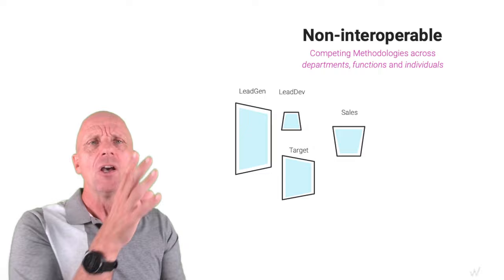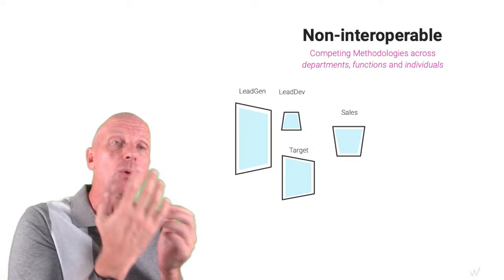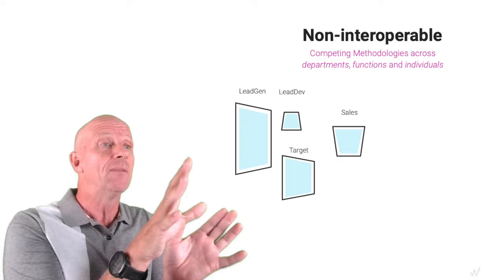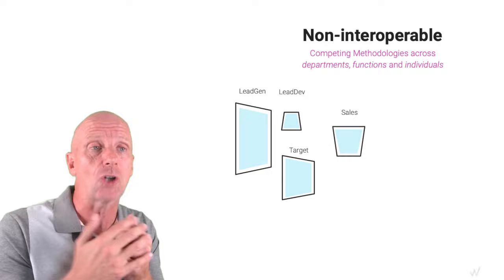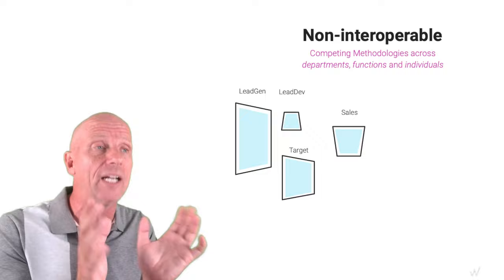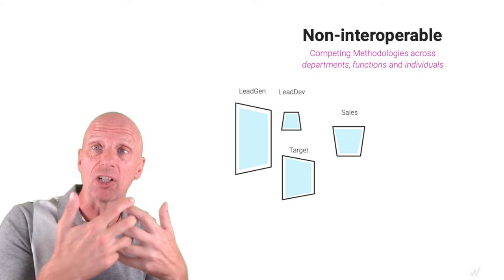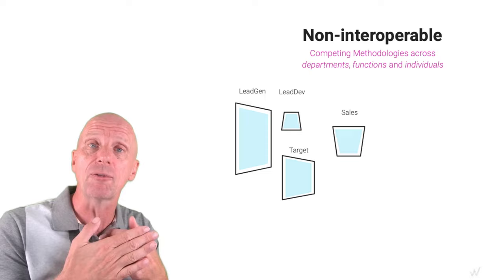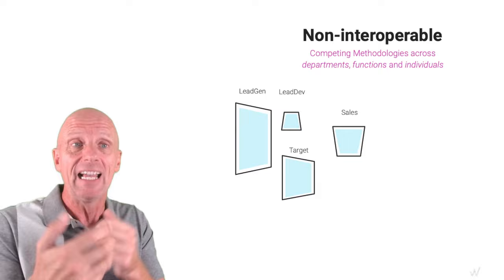What we see today is that recurring revenue organizations have a very strong focus on lead generation, lead development, targeting, and sales functions. These all have common methodologies like MEDDIC, MEDDPICC, ABM, and BANT — and they are quite good. The problem is they don't interface with each other. They don't work with each other. As a result, departments don't work together — like customer success and sales. Functions don't work together, like onboarding with expansion.